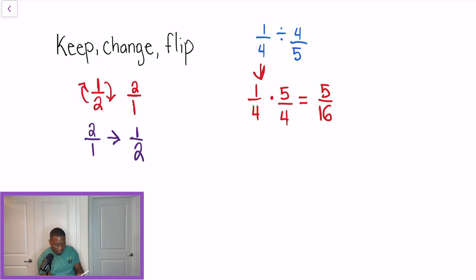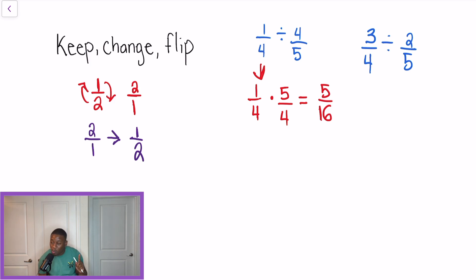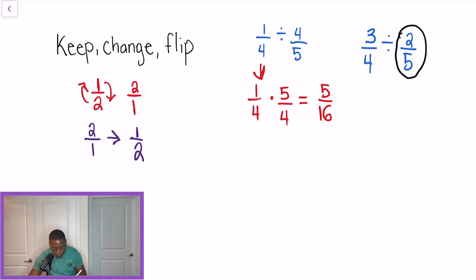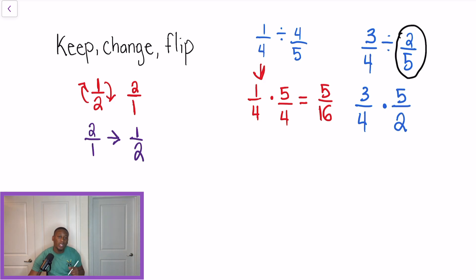Let's look at a few more examples. In our second problem we have three fourths divided by two over five. One very important rule when we're dividing fractions: when we take the reciprocal, we never take the reciprocal of the first fraction, and we never take the reciprocal of both fractions — we only take the reciprocal of the second fraction. So three over four will stay the same, and two over five is the fraction we flip. We get three over four multiplied by five over two, which gives us 15 over 8.